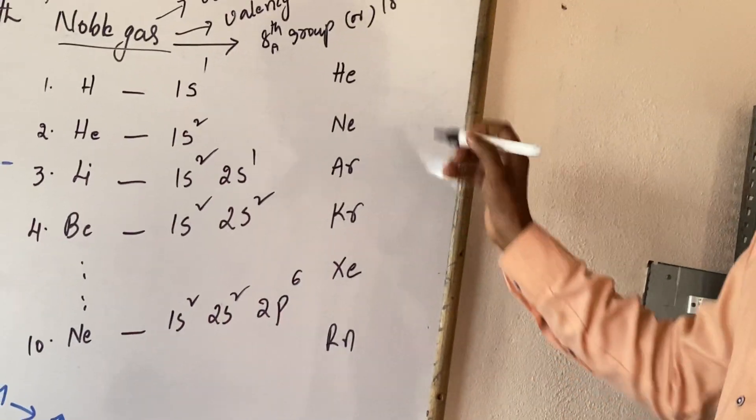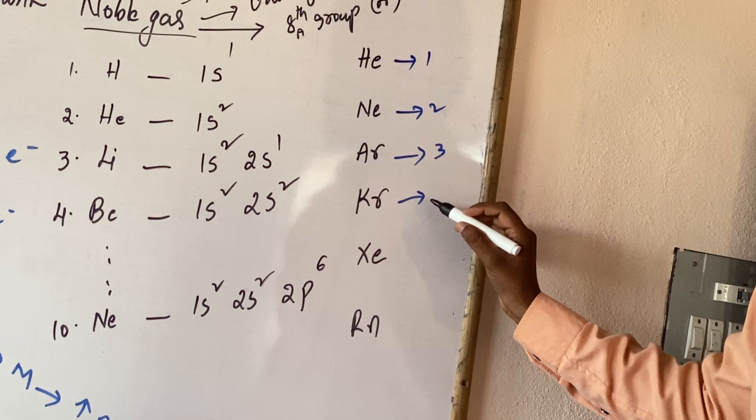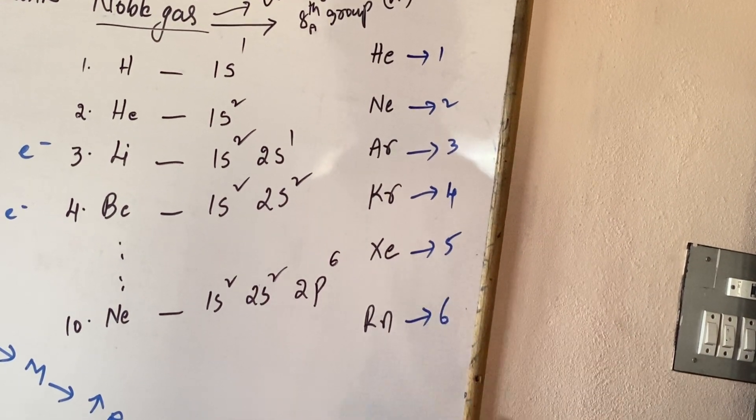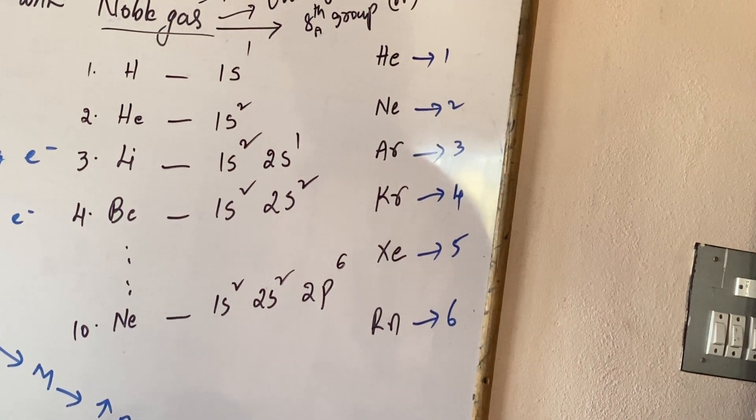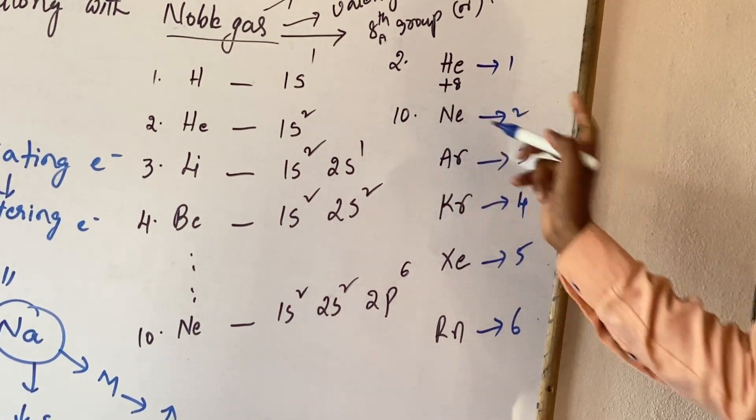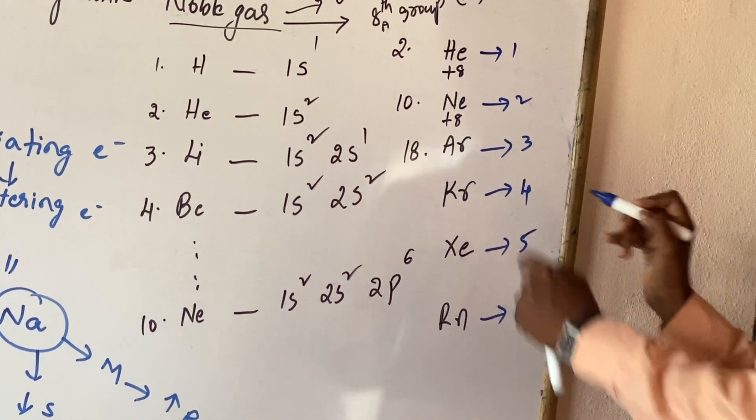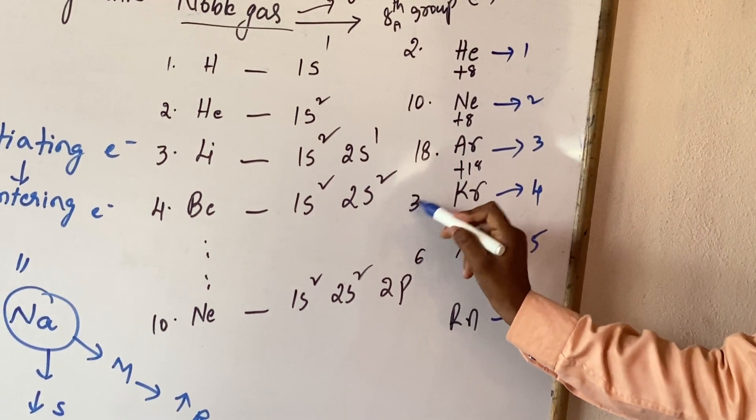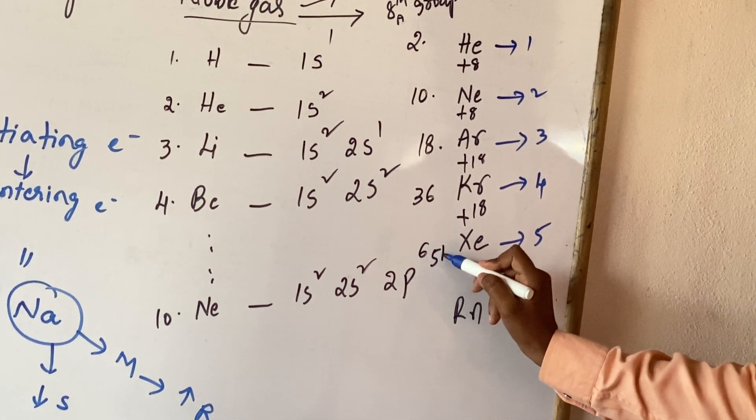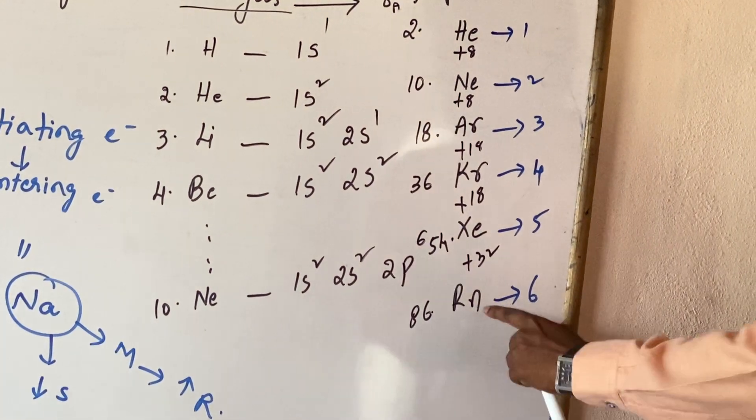Now, the helium belongs to the period number 1, neon, second period, argon, third period, krypton, fourth period, xenon, fifth period, radon, sixth period. The atomic number of helium is 2, while adding the main numbers here, 2 plus 8, 10, 10 is the atomic number of neon, 10 plus 8, 18, 18 atomic number of argon, 18 plus 18, 36, atomic number of krypton, 36 plus 18, 54, atomic number of xenon, 54 plus 32, 86, atomic number of radon.